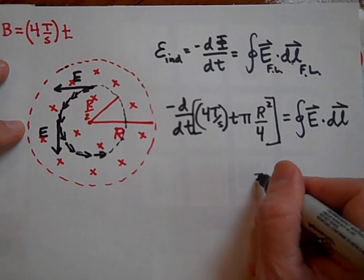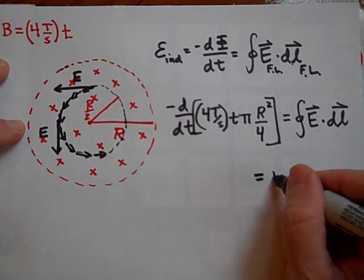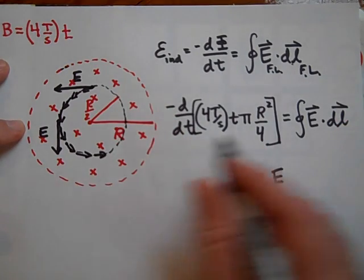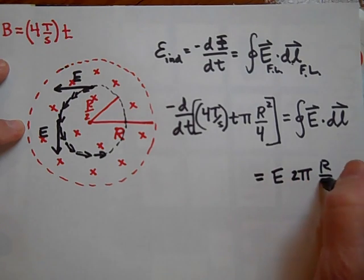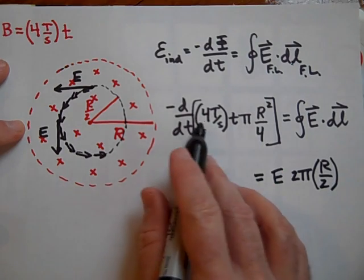I'm also going to pull the E out of this integral, because why would we expect E to be any greater here than here than here than here? Because of the symmetry of the situation, it's always going to be the same. So this side is going to be E when I pull the E out, and then when I add up all the dL's—that's what this integral is telling me to do—it's just going to be 2 pi times R over 2, the circumference of a circle.